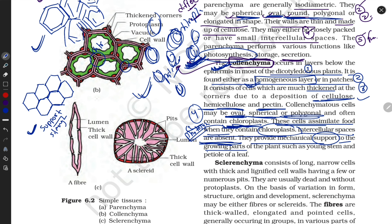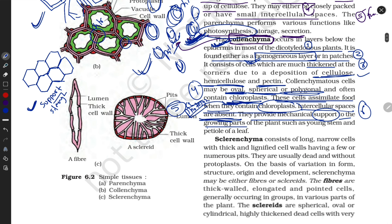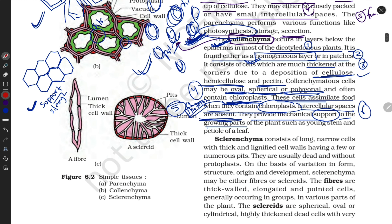Because collenchyma cells are highly compact with no intercellular space, they are responsible for providing mechanical support and strength to the growing parts of the plant.